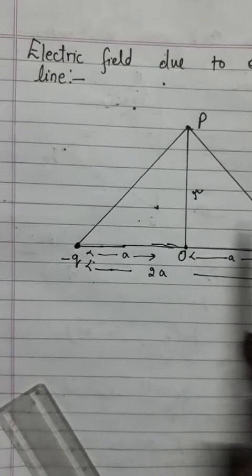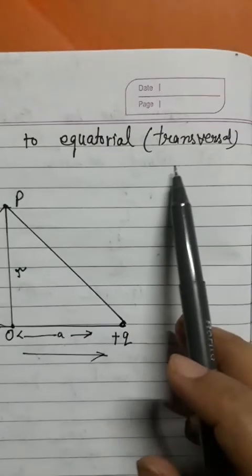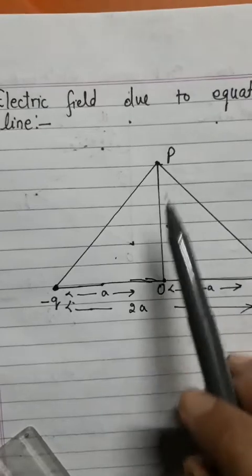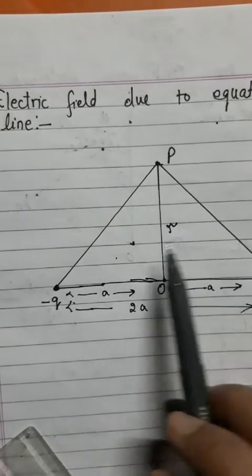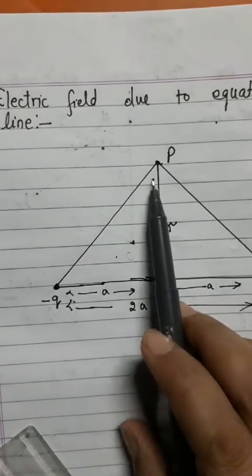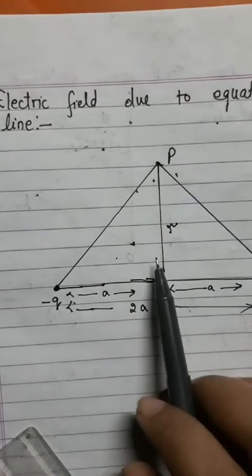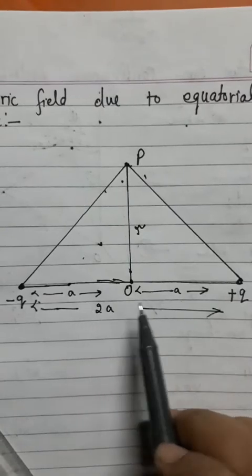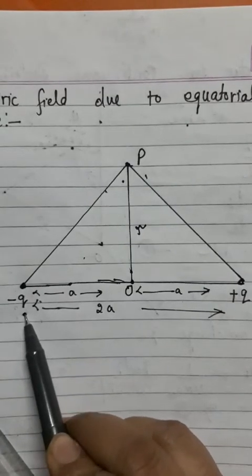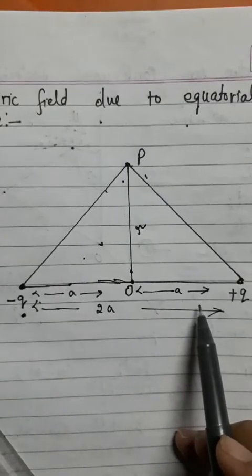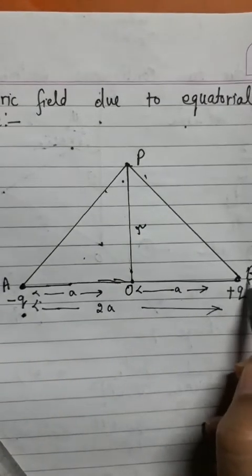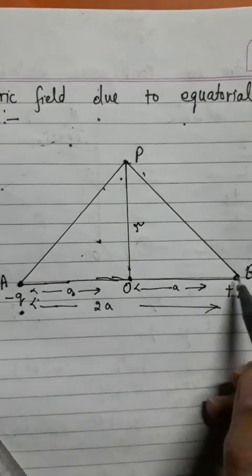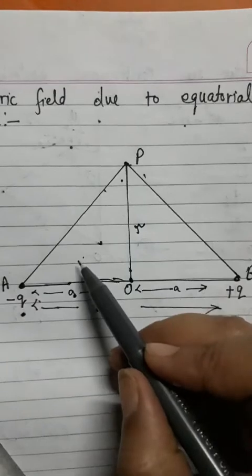Students, today our topic is electric field due to an equatorial or transversal line. We need to find out the electric field on the equatorial line. The equatorial line means the observation point is at right angle to the dipole. Consider an electric dipole having charge minus Q and plus Q at points A and B, at a distance 2A from the center — distance from center to A is A, and center to B is A.